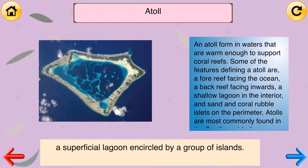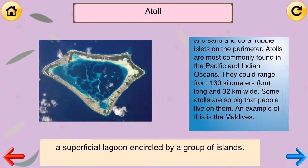Atoll: a superficial lagoon encircled by a group of islands. An atoll forms in waters that are warm enough to support coral reefs. Some of the features defining an atoll are a fore reef facing the ocean, a back reef facing inwards, a shallow lagoon in the interior, and sand and coral rubble islets on the perimeter. Atolls are most commonly found in the Pacific and Indian Oceans.